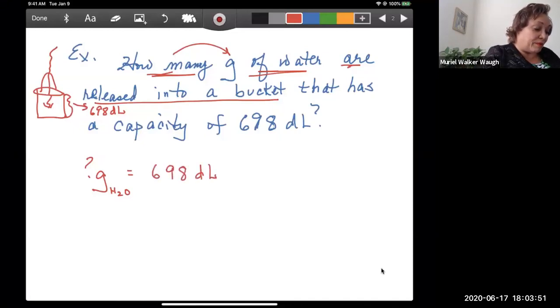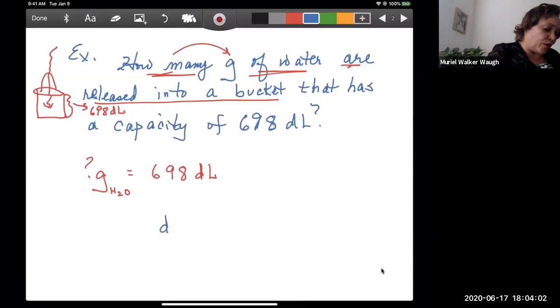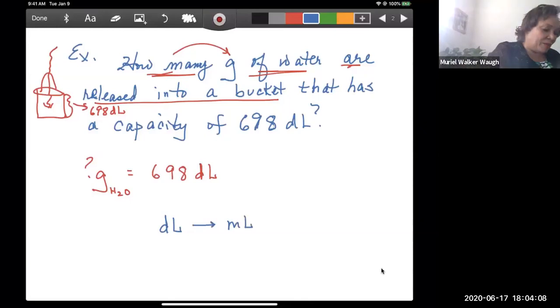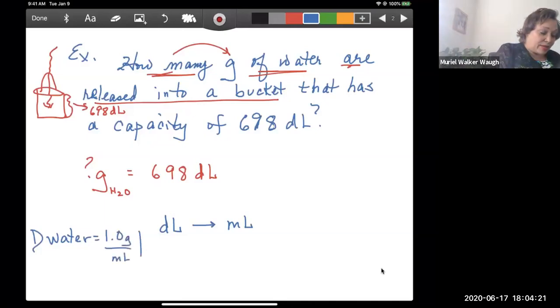Now that's crazy, but anyway, so 698 deciliters, big bucket. All right, so now with that in mind, let's write a path. Same old stuff, nothing's changed, right? So you know that you got to go from a deciliter, somehow you've got to get to a milliliter. Why? Because you just learned for water the density of water is equal to 1.0 grams per milliliter.